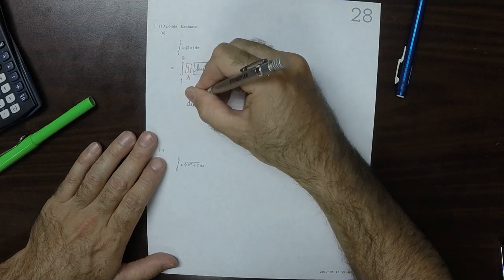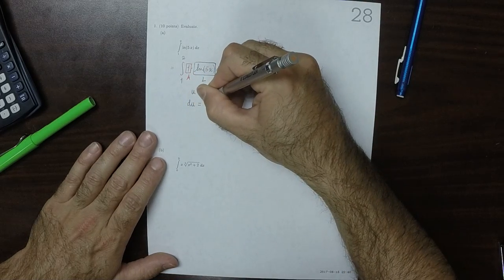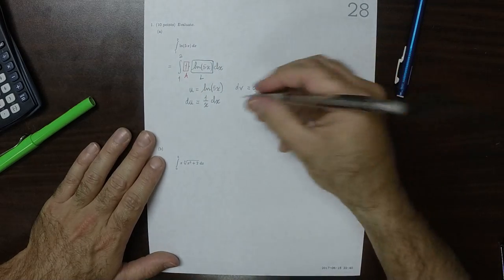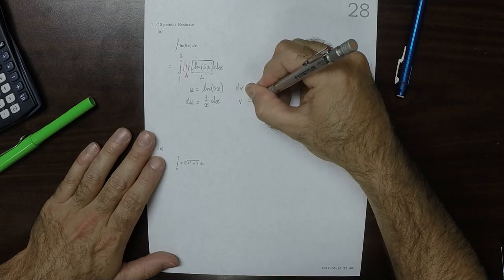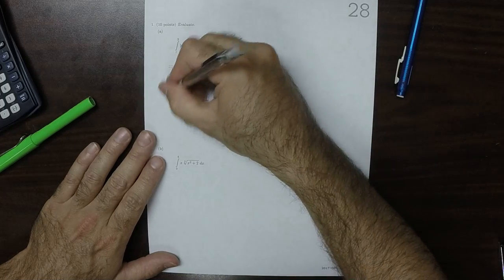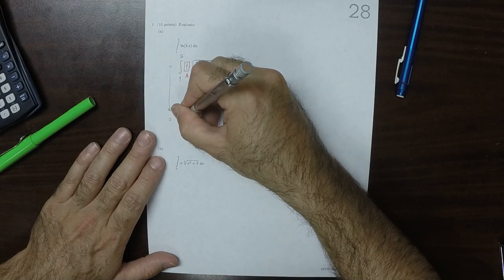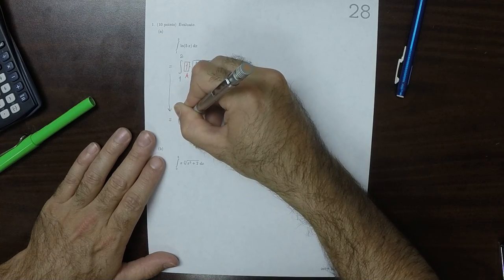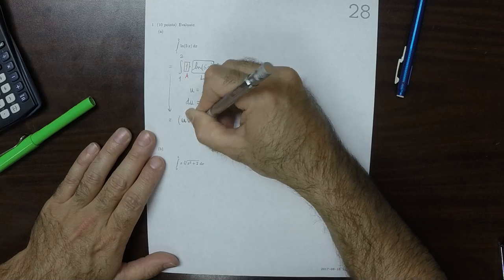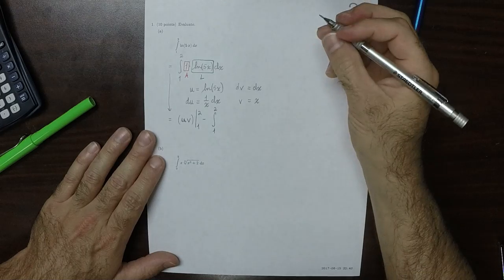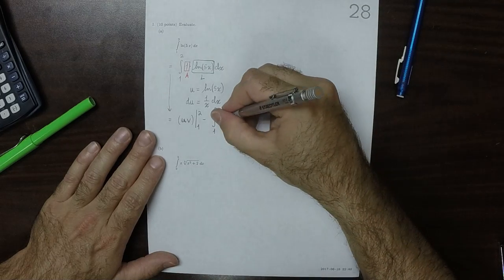So then du is 1 over x dx. You should check that. And then v is x. And the right-hand side of integration by parts is saying that this should be uv, evaluated from 1 to 2, minus integral from 1 to 2 of v du.